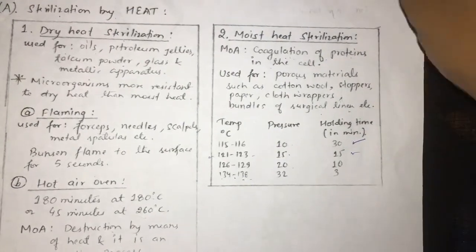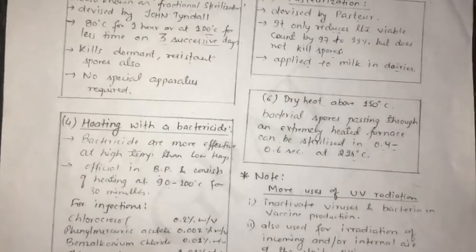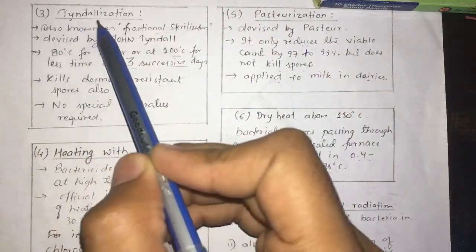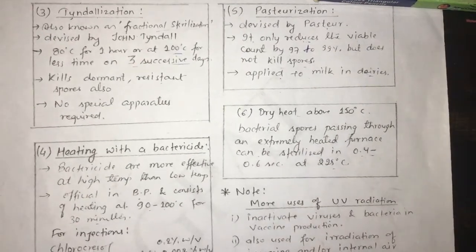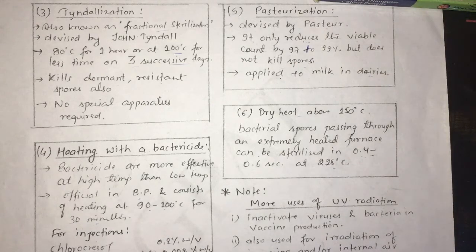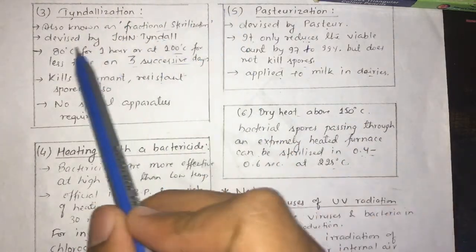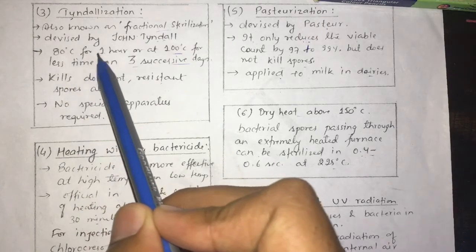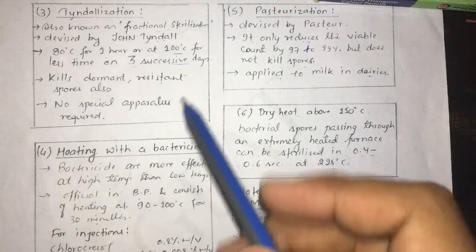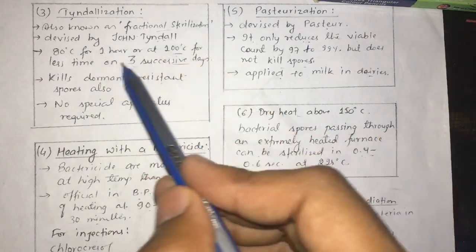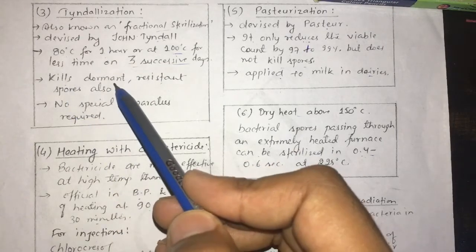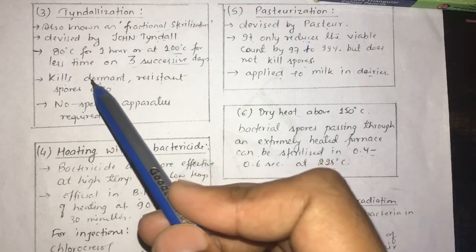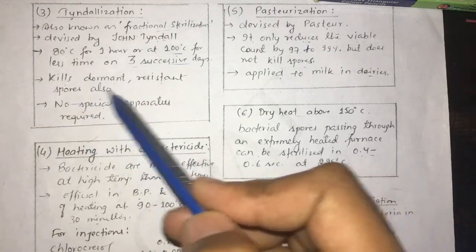The next process is tindallization, also known as fractional sterilization. Originating from the 19th century, it was derived by John Tyndall and is usually used in the food industry. The method uses 80°C for one hour or 100°C for less time, for three successive days. It is used to kill dormant and resistant spores, does not require any special apparatus.